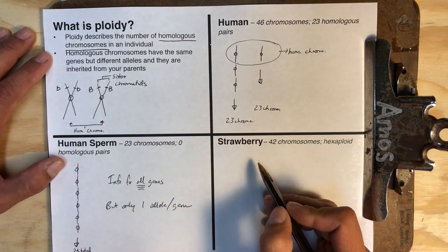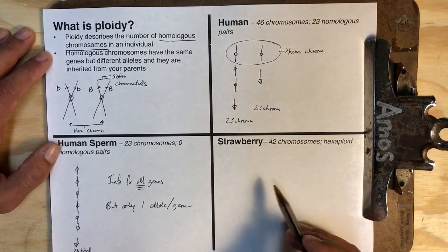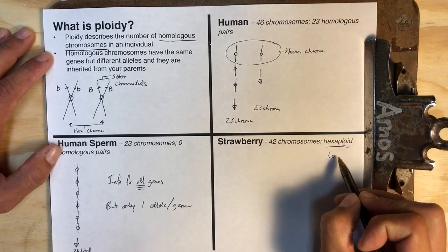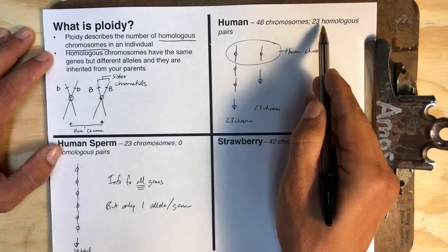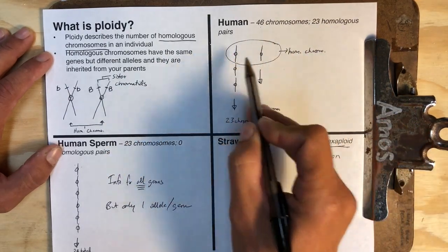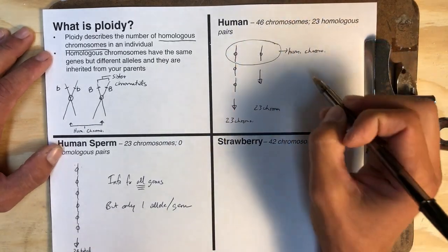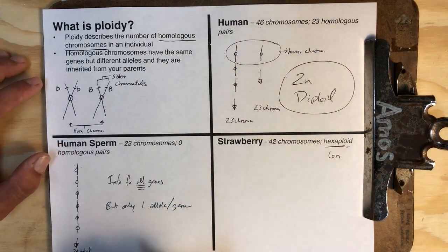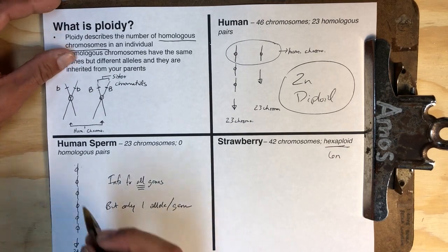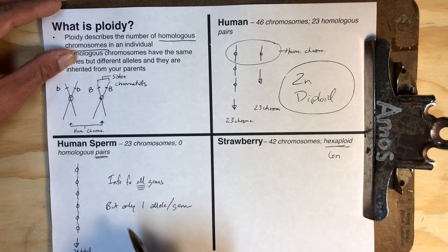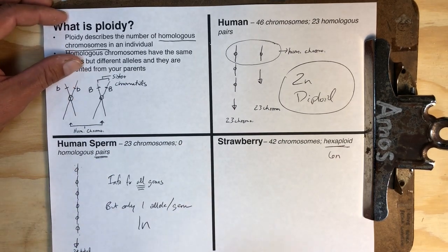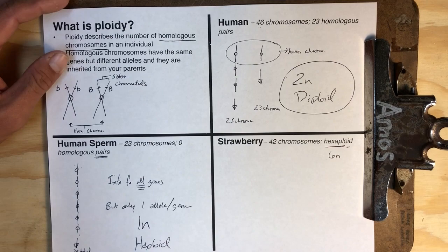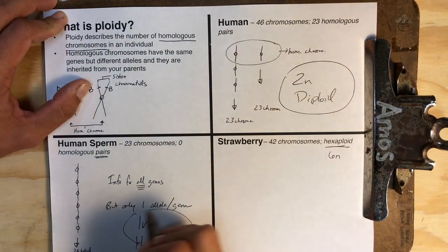Another example is a strawberry. Strawberries are plants, and plants can tolerate a whole bunch of chromosomes. Strawberries in particular are hexaploid, meaning they are 6n. In humans, we had 23 homologous pairs with two members of every single homologous chromosome, making us 2n or diploid. If we're looking at one of your gametes, they've only got one member of every single homologous pair, so they are 1n, which we call haploid. A strawberry is 6n, which is hexaploid.